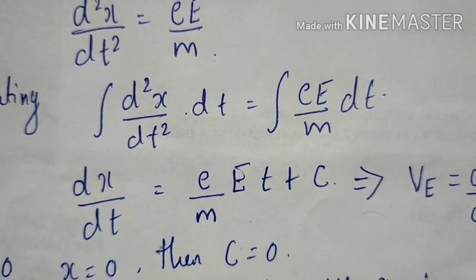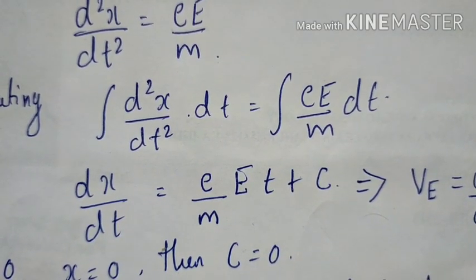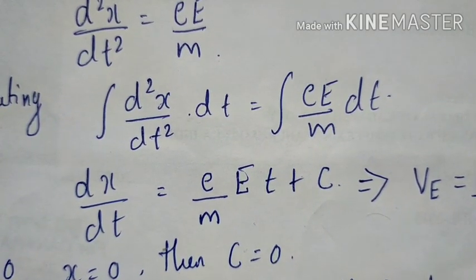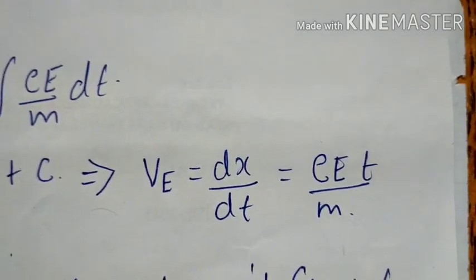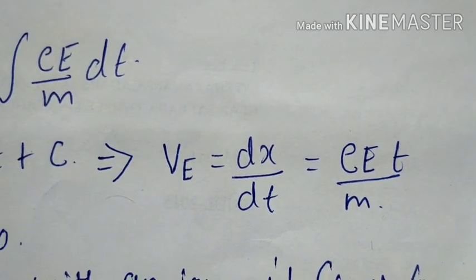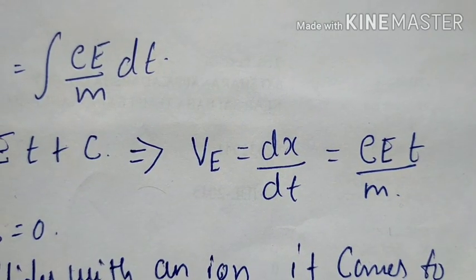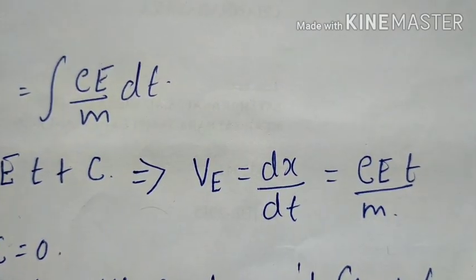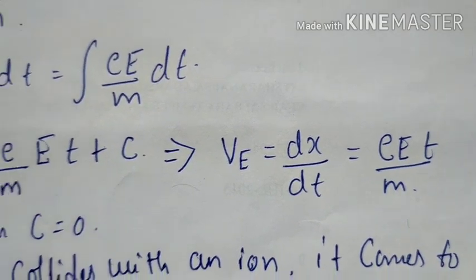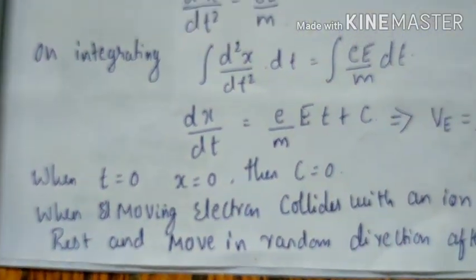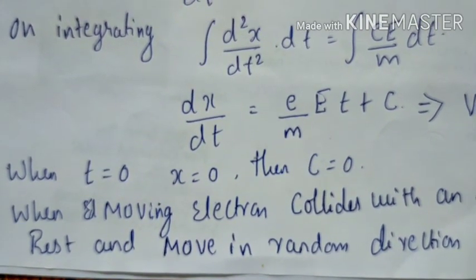On integrating, we get dx/dt = (eE/m)t + C, where C is the integration constant. Taking dx/dt as v_e, the velocity becomes v_e = eEt/m. When t = 0, x = 0, so C = 0.